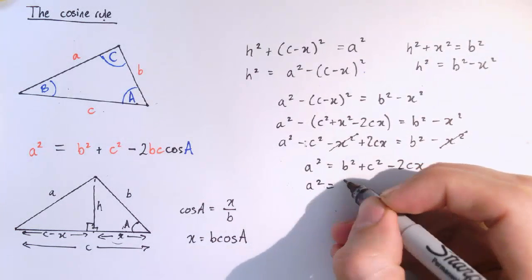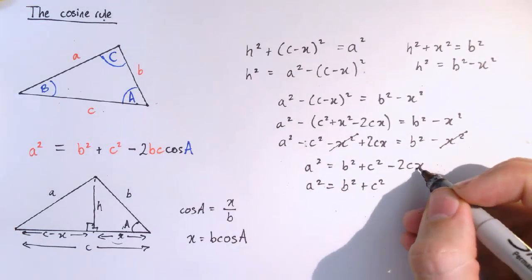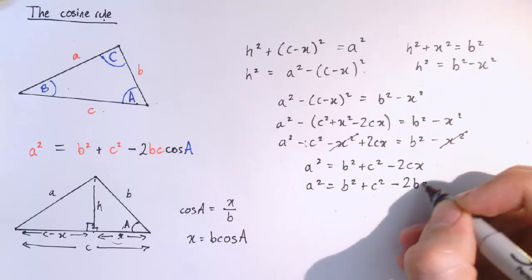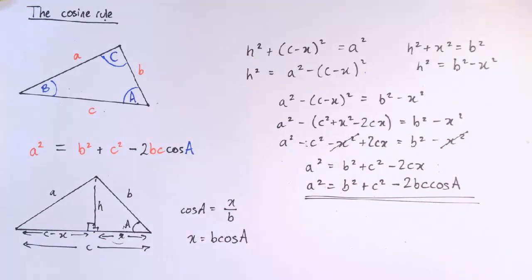So actually substituting that in here, we get a squared is b squared plus c squared. And x is b cos a. So this becomes minus 2bc cos a. And that's exactly the cosine rule.